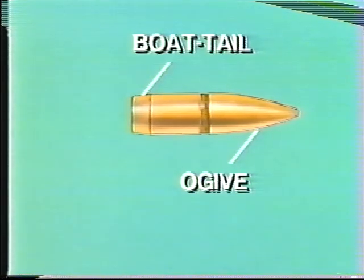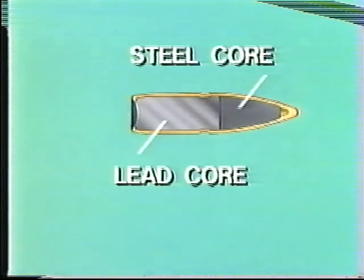Bullet surfaces are smooth and angles rounded to improve flight stability and reduce drag at supersonic speeds. The bullet consists of a copper jacket, a steel core, and a lead core.